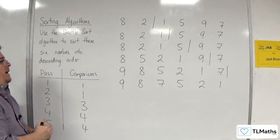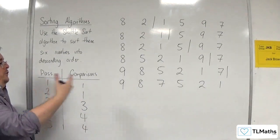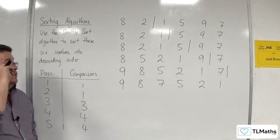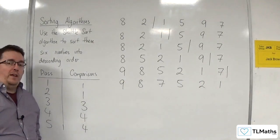And that is how we can sort these 6 numbers into descending order using a shuttle sort.